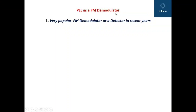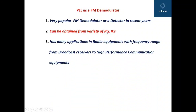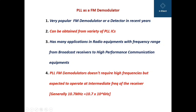PLL as a FM demodulator has got the following characteristics. It is a very popular FM demodulator or detector in recent years. It can be obtained from a variety of PLL ICs. It has many applications in radio equipment with frequency range from broadcast receivers to high performance communication equipment. PLL FM demodulators are expected to operate at the intermediate frequency of the receiver, which is generally 10.7 MHz.